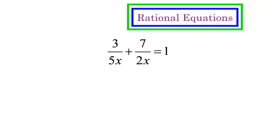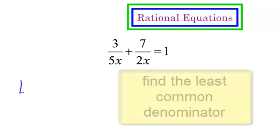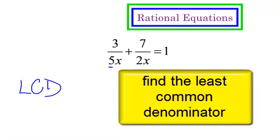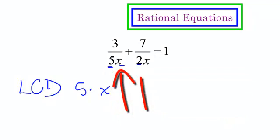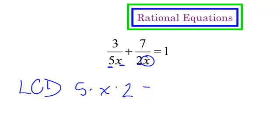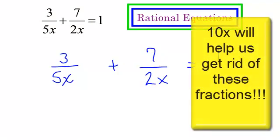I need to multiply everything by my least common denominator so I can get rid of these fractions. For the least common denominator, look at your numbers first. This is 5 times x, so I need a 5. I need an x — that's one of my factors. I need a 2. I'm not going to say x again because I already have an x. So 5 times x times 2 — my least common denominator will be 10x.